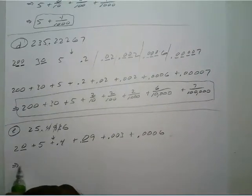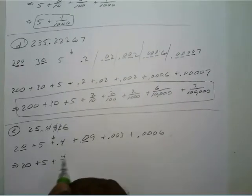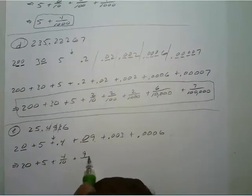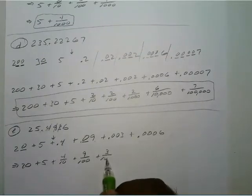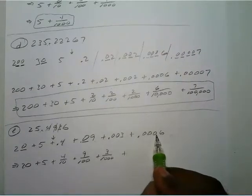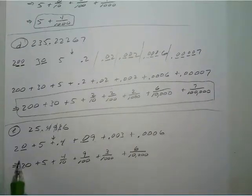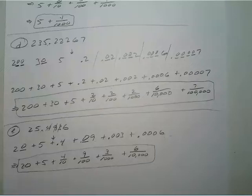That gives us 20 plus 5 plus 4 tenths plus 9 hundredths plus 3 thousandths plus 6 ten-thousandths. So that's 20 plus 5 plus 4 over 10 plus 9 over 100 plus 3 over 1000 plus 6 over 10000. Hopefully this made sense, and I will see you on the next video.